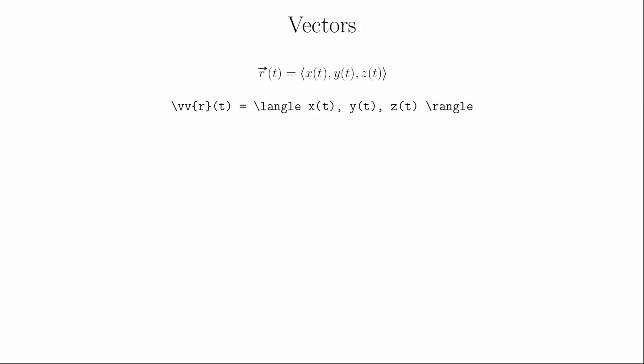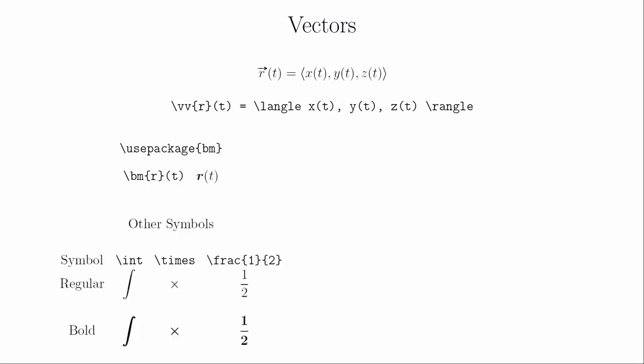As we move on to multivariable calculus, we have to start working with vectors. The bracket notation for vectors is created using \langle and \rangle. You can also use the \left and \right commands to let LaTeX decide how big to draw them. Some textbooks use a boldface notation for vectors, accomplished using the bm package with the \bm command. However, I personally prefer drawing vector arrows over my vectors using the esvect package with the \vv command — this stretches the arrow to an appropriate length above the symbol. If you want the vector arrow to ignore subscripts, you can use the \vv* command.